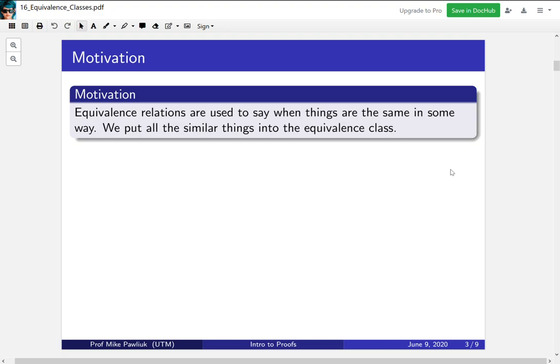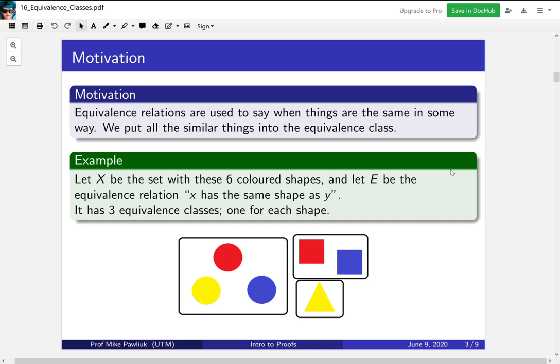Let's see an example of this. Let X be the set with these six colored shapes: red, yellow, and blue. And let E be the equivalence relation, X has the same shape as Y. If we group these into the sets of things that are the same shape, we put all three circles together, we put the two squares together, and we leave this triangle on its own. Each of these sets will be what's called an equivalence class.